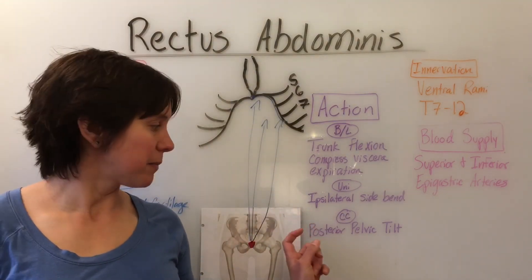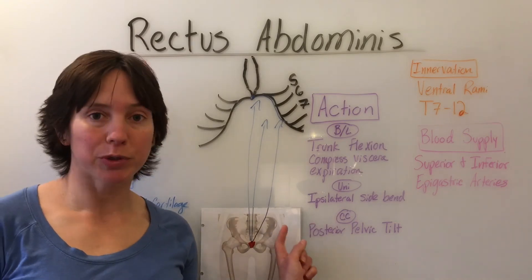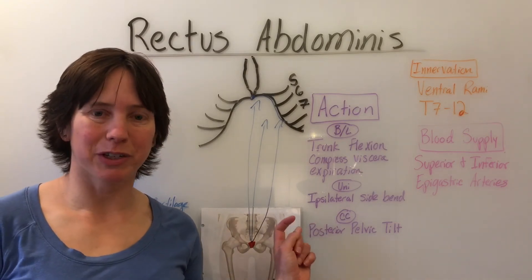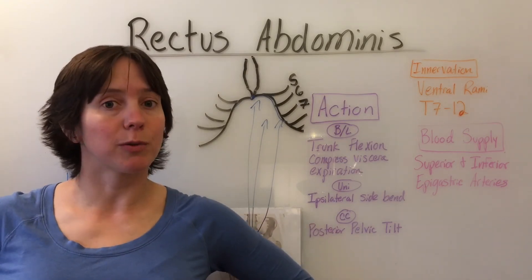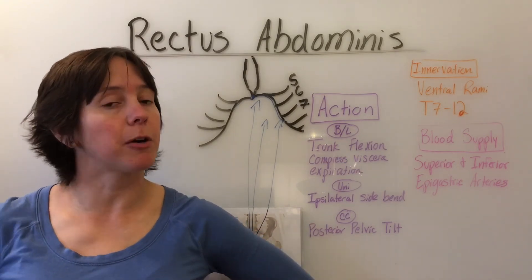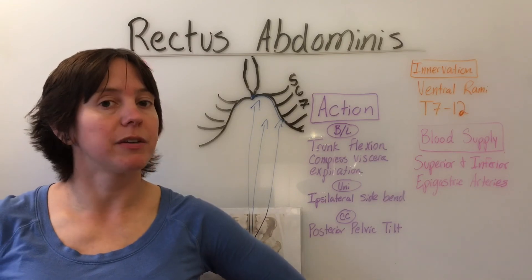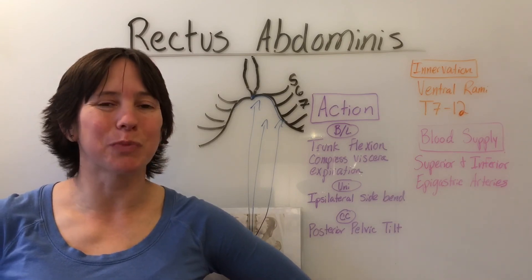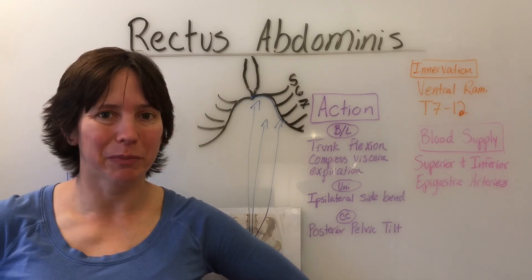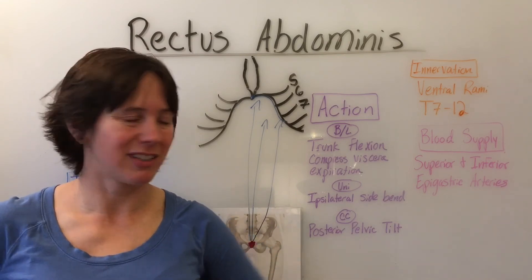Closed chain action is posterior pelvic tilt. So if the trunk was locked and the pelvis was free, the rectus abdominis would do posterior pelvic tilt.